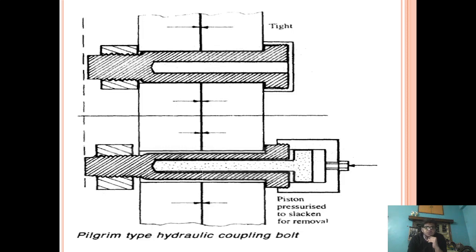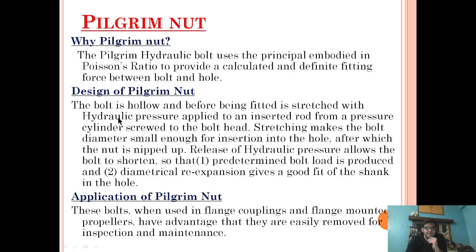The reason we study Poisson's ratio is that it is very important to know how much stress we are going to apply, so that we can stretch the bolt to the correct extent — enough that it doesn't lose its elasticity, doesn't go into the plastic region, and doesn't develop any other problems. The bolt is hollow and before being fitted it is stretched with hydraulic pressure applied via an inserted rod from a pressure cylinder screwed to the bolt head.